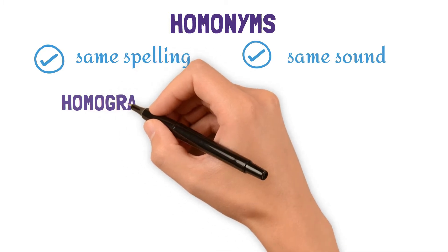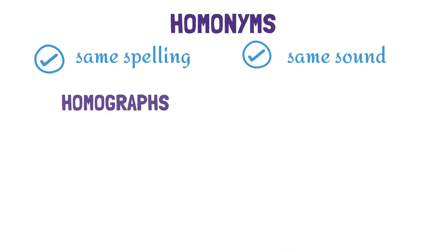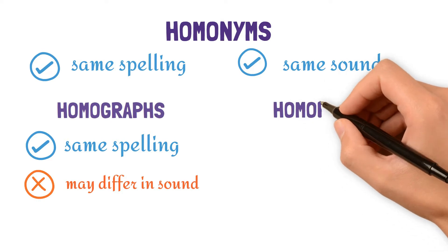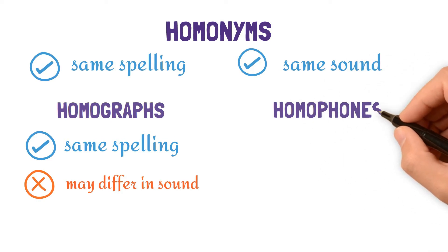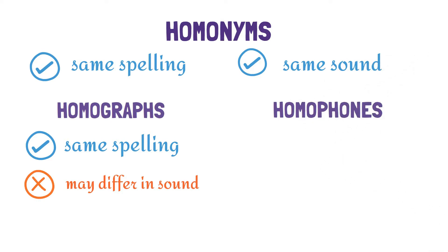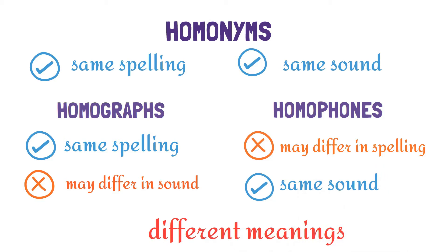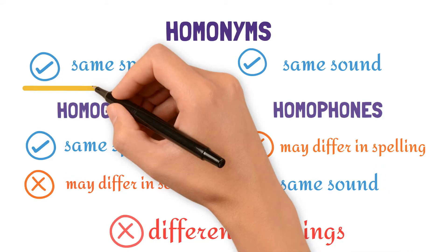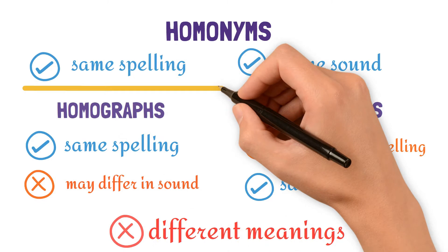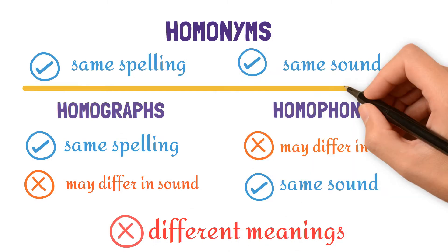Homonyms are words with the same spelling and same sound. While homographs have the same spelling but differ in sound. Homophones differ in spelling but have the same sound. All of these have different meanings.